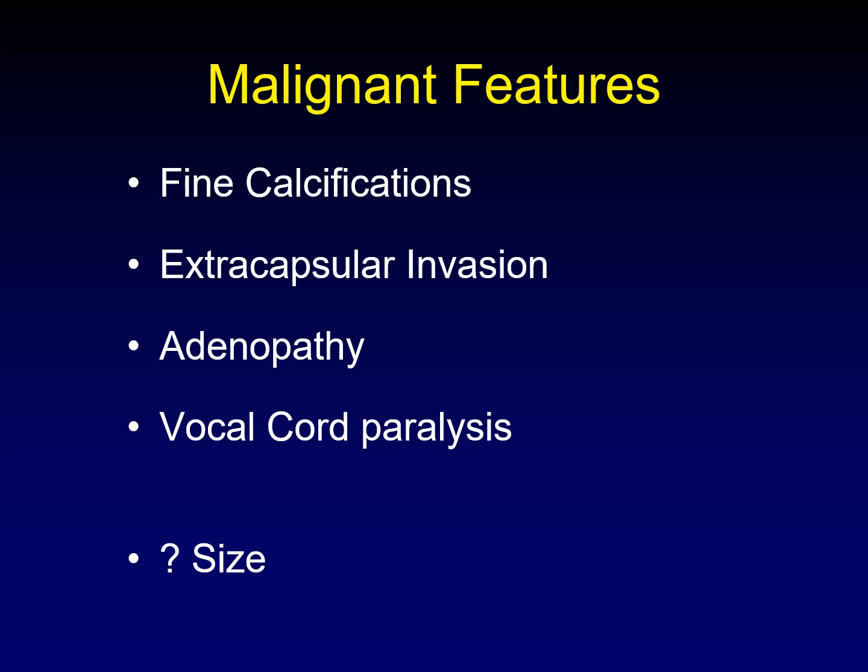We're also looking for extracapsular invasion — obviously that's going to be a sign of malignancy. You can get a very large thyroid mass that's still well-defined because the capsule expands around it. We're looking for metastatic adenopathy, and we're looking for vocal cord paralysis. Even a large thyroid mass compressing on the recurrent laryngeal nerve won't cause vocal cord paralysis — you only get vocal cord paralysis when there is a malignancy invading into those nerves. So that's a strong indicator.